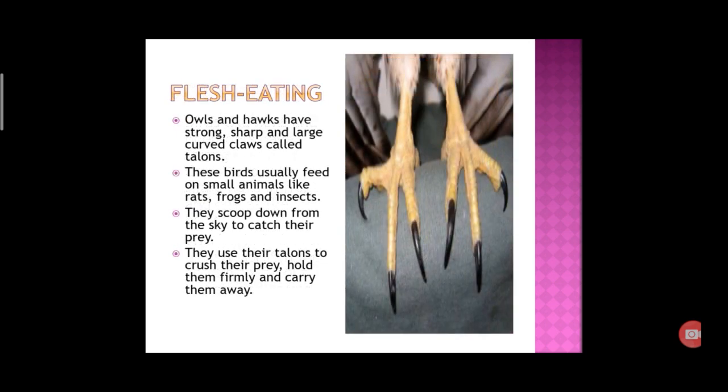The birds who eat small birds and animals have very strong, sharp and large curved claws called talons, which help them to catch, crush and carry their prey. For example, hawk, eagle, etc.